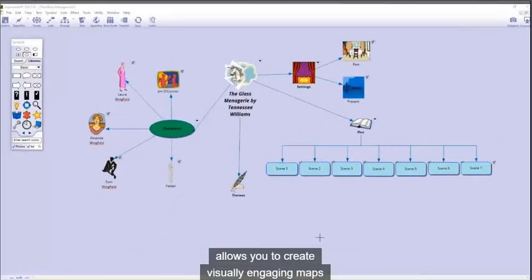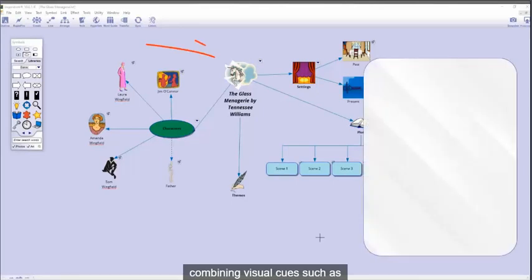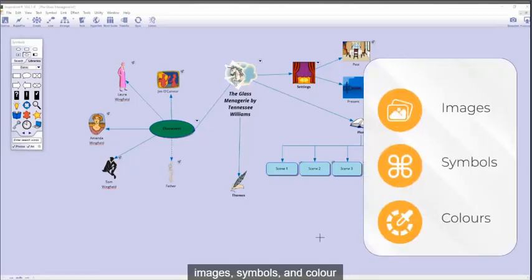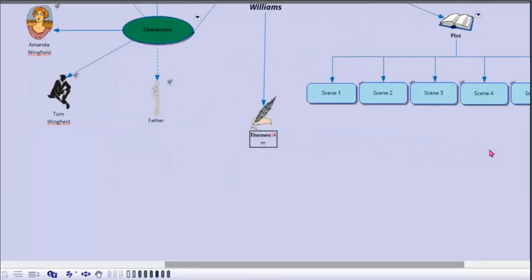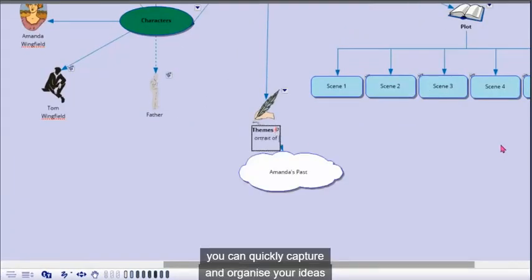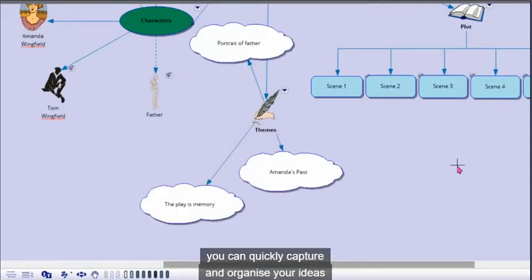approach allows you to create visually engaging maps combining visual cues such as images, symbols, and color with verbal cues such as keywords and phrases. Using the rapid fire tool, you can quickly capture and organize your ideas before you